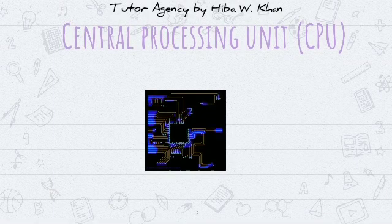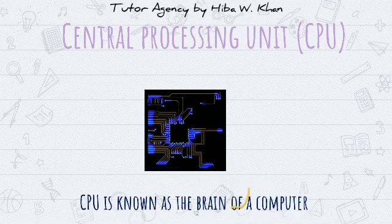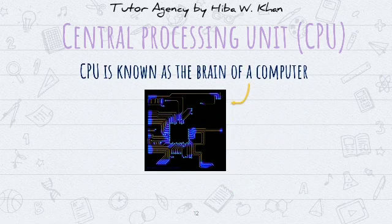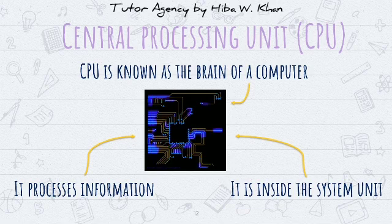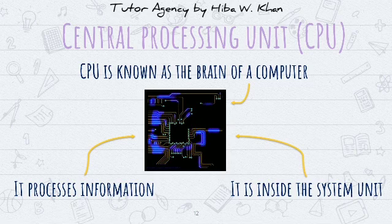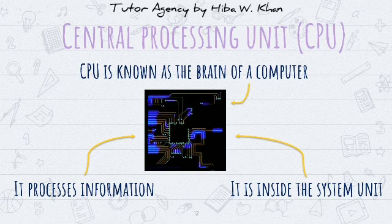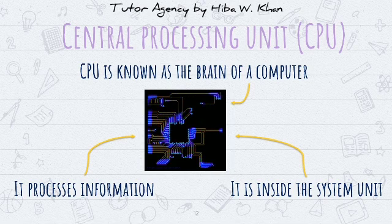The central processing unit, which we call the CPU, is known as the brain of a computer. It is located inside the system unit. Just as the brain is the most important part of the human body — where memory and information is stored — the CPU is the brain of the computer, where all information is processed.